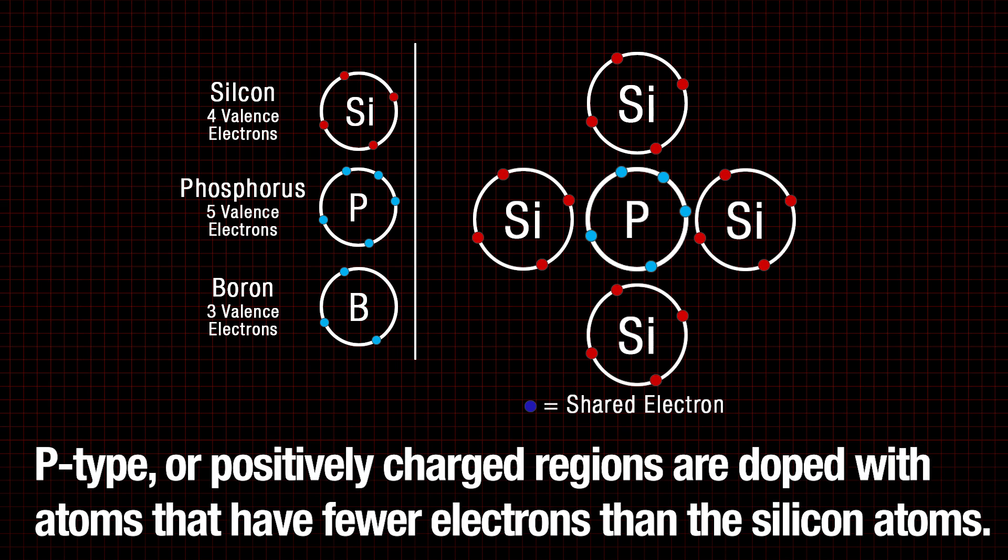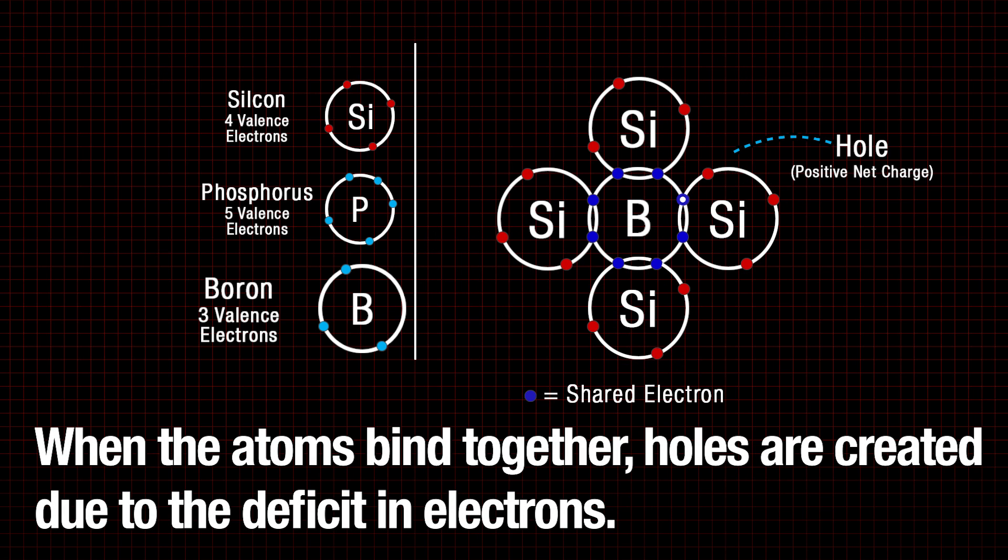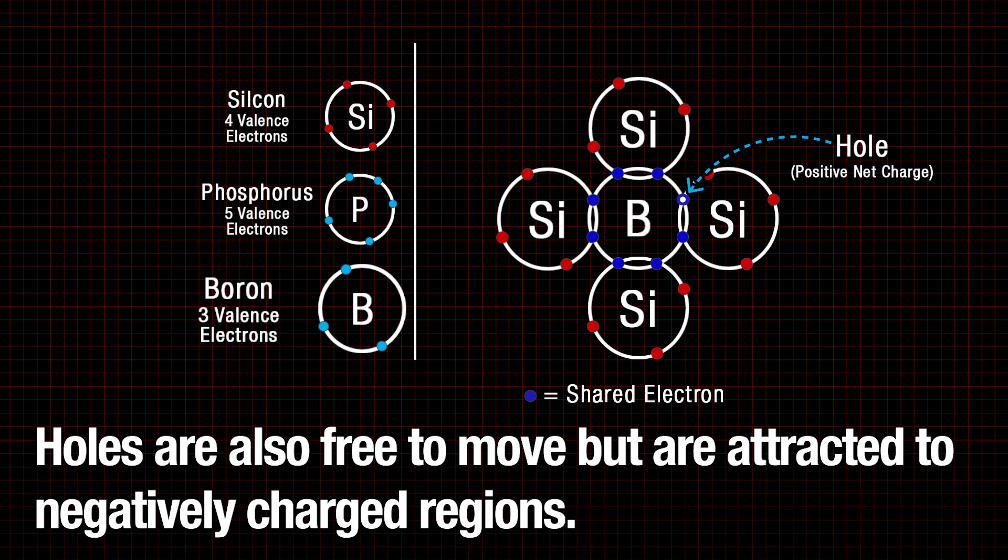P-type or positively charged regions are doped with atoms that have fewer electrons than the silicon atoms. When the atoms bind together, holes are created due to the deficit in electrons. Holes are also free to move, but they are attracted to negatively charged regions.